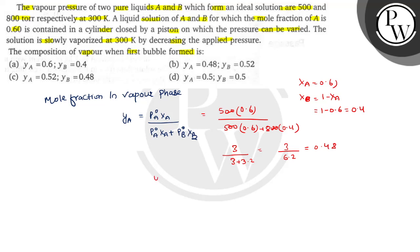So y_a equals to 0.48, y_b equals to 1 minus y_a which is 1 minus 0.48 hoga 0.52. To yeh banega 0.52. To right hai bachow?